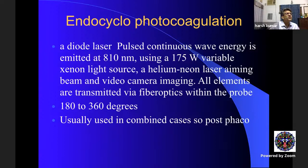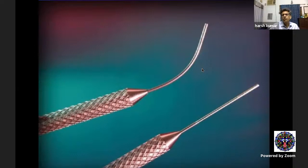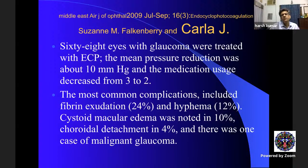Endo-cyclophotocoagulation uses a diode laser combined with a xenon light source, helium-neon aiming beam, and video camera in one probe. You ablate the ciliary body under direct endoscopic visualization and can also push back or flatten the iris to open the angle. These are typically used at the time of cataract surgery — in a patient with glaucoma and cataract who does not need trabeculectomy, endocyclophotocoagulation can achieve good results. Complications include fibrin exudation, hyphema, CME, and choroidal effusion — one must be careful.